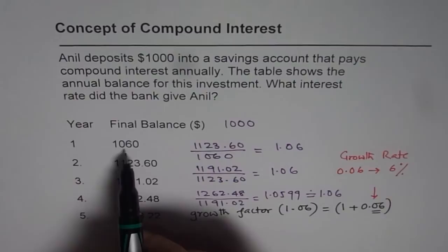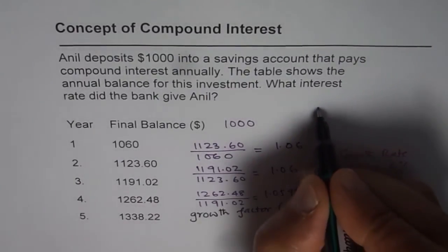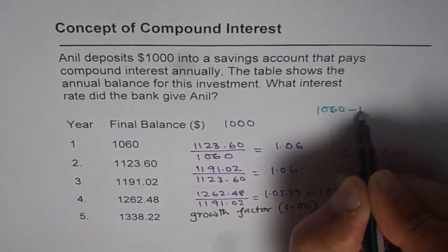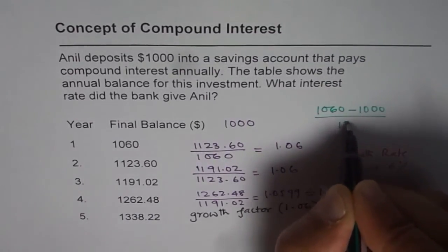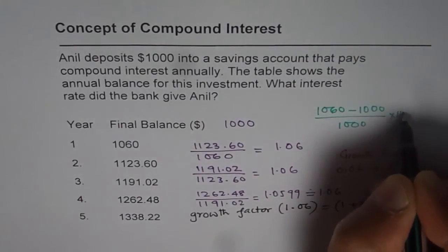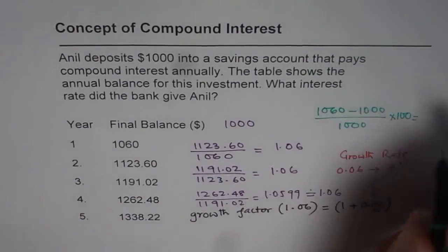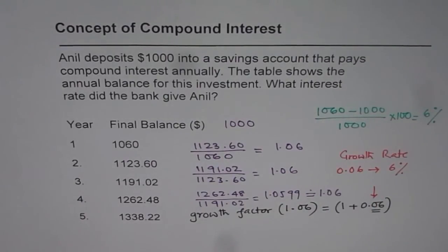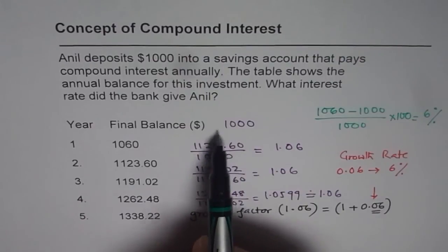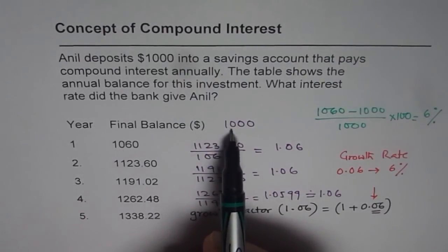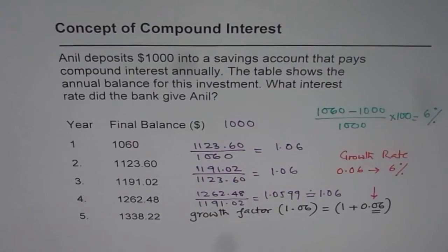Since the growth in the first year is from $1,000 to $1,060, the earning is: 1060 minus 1000, divided by 1000, times 100 — which gives us 6%. So we could find the interest rate from the first year itself. It is important to know that if we are given the interest for the first year, then simple interest and compound interest will be the same, and that helps you to sometimes solve a question.